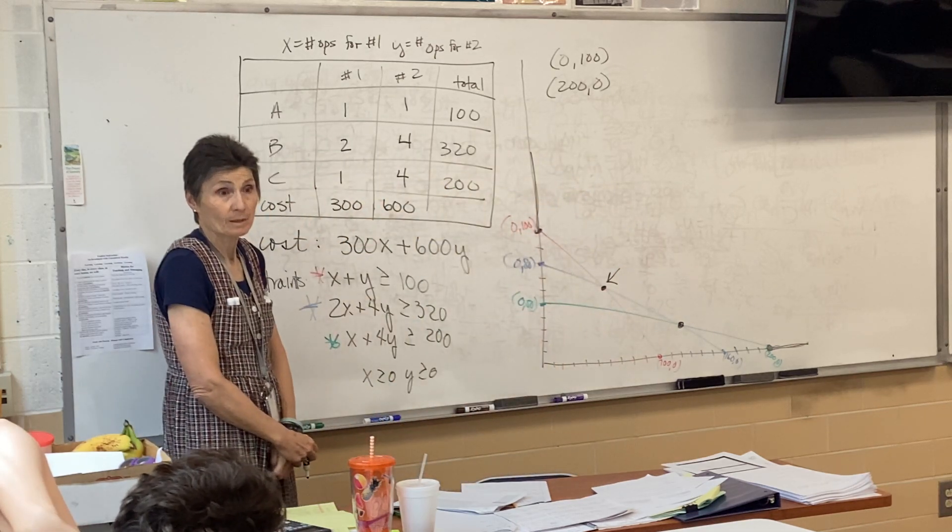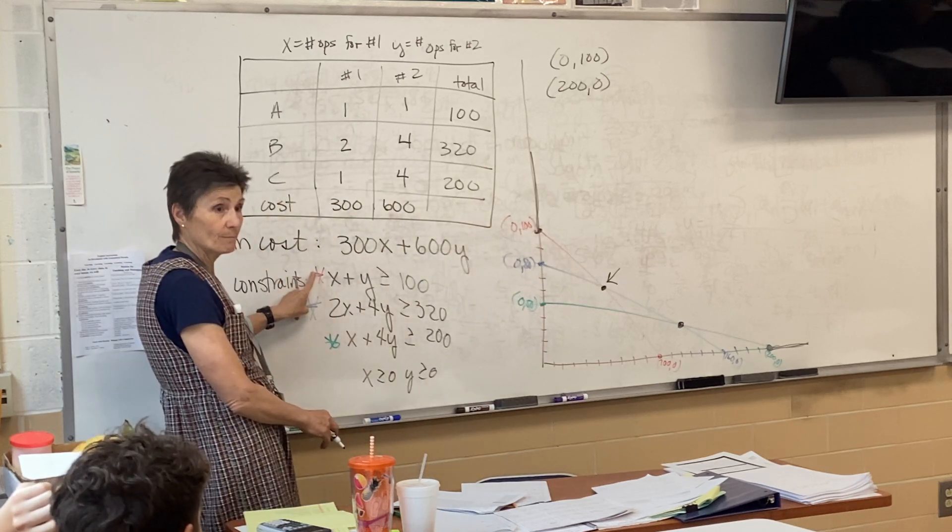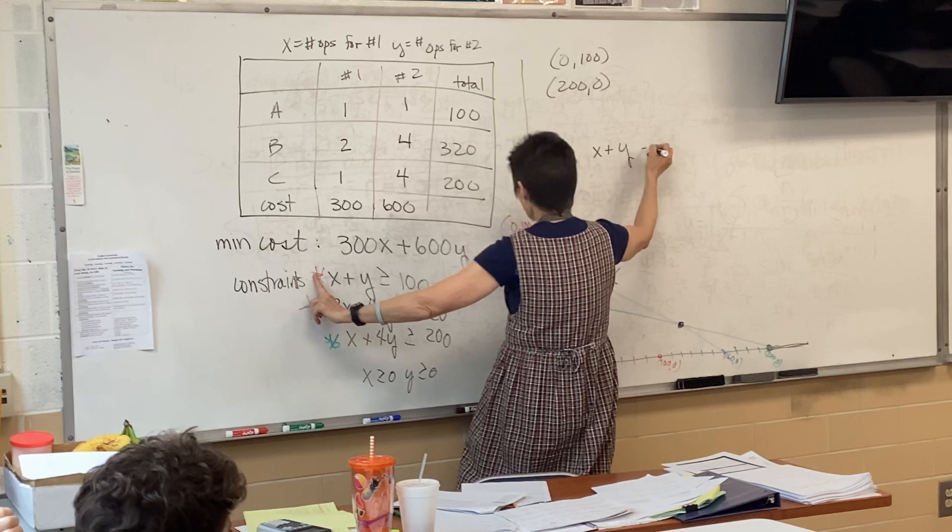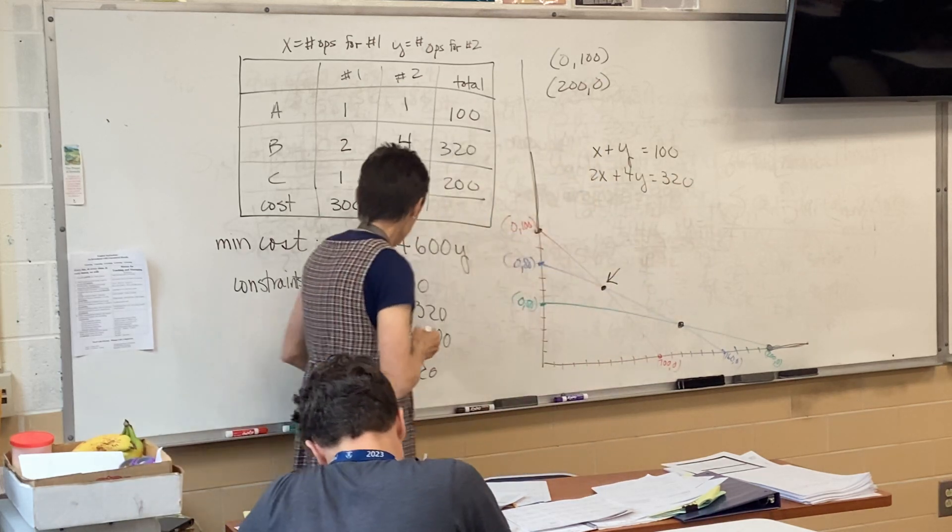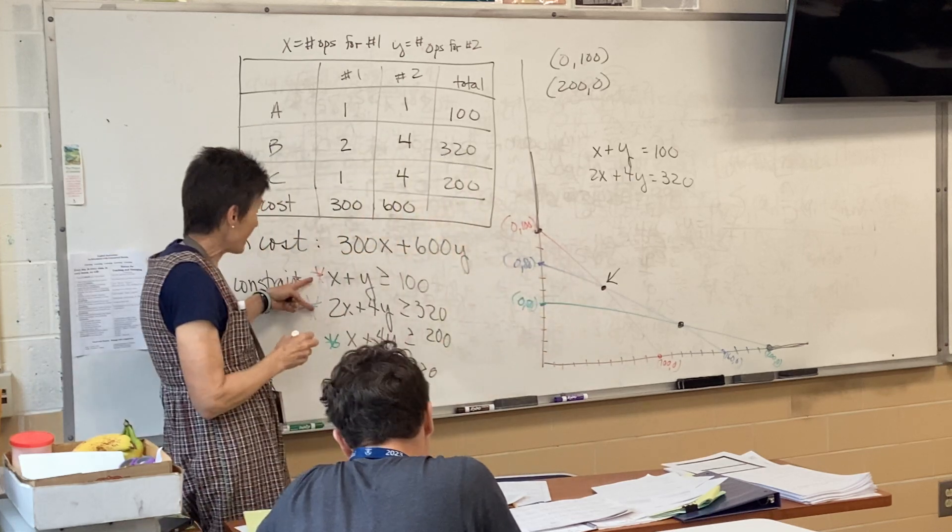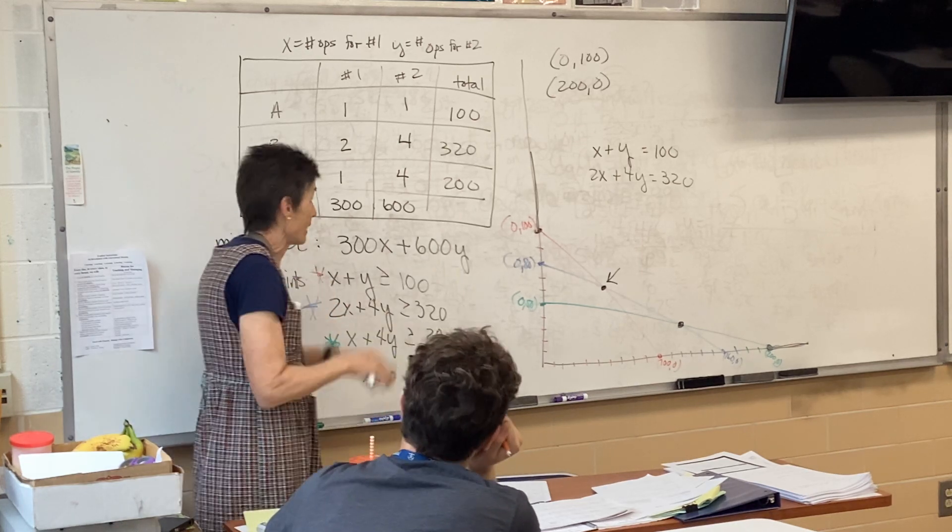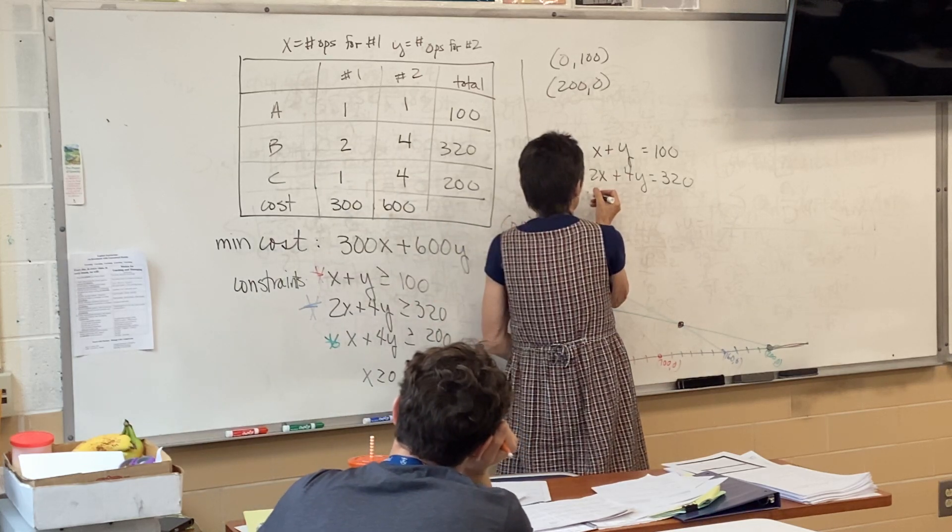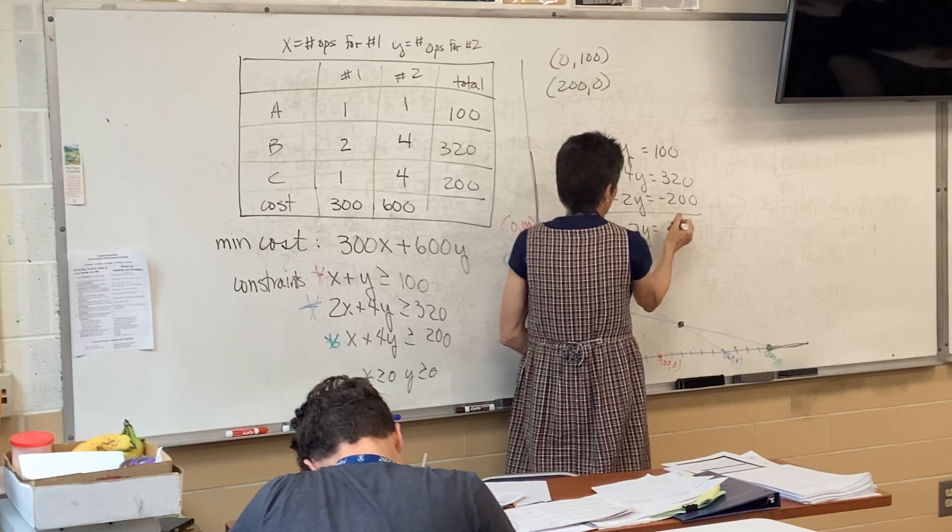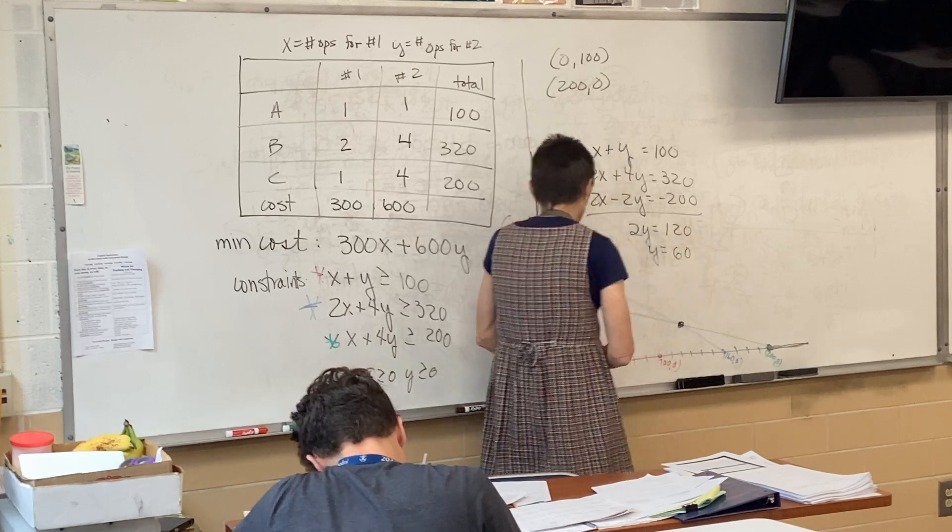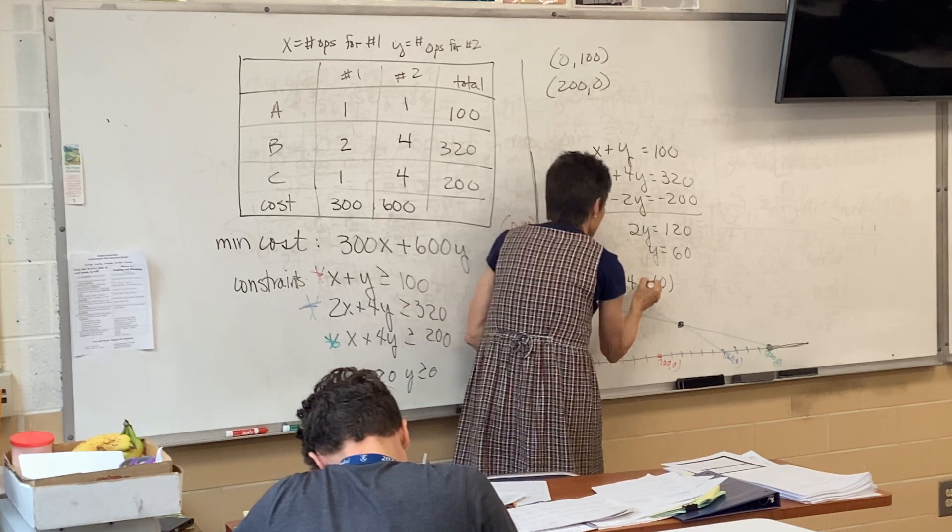Looking for the intersection of, in this case, blue and red. So I'll solve that system, my blue equation and my red equation. Any way I want. That's my, this point is blue and red. So any way I want, I'm going to solve that. So you can substitute, you can eliminate, you can do Cramer's rule, you can, it doesn't matter, whatever, whatever flips your switch. So I'm going to eliminate. I got y is 60. And that means x is 40. So I got 40, 60.